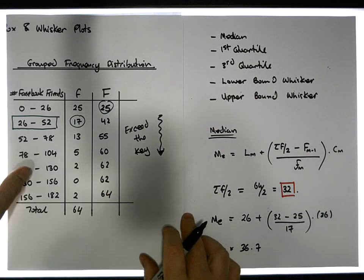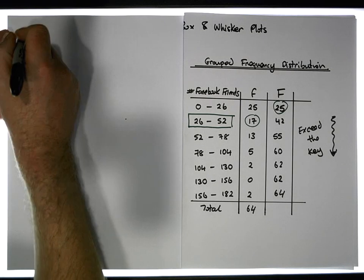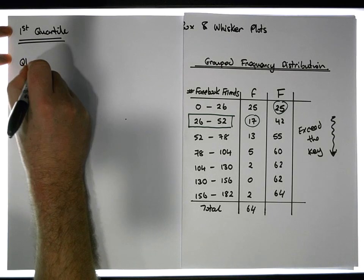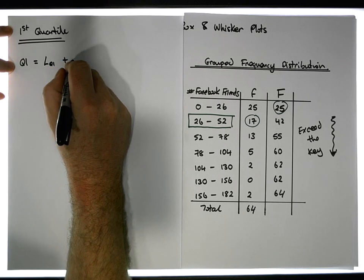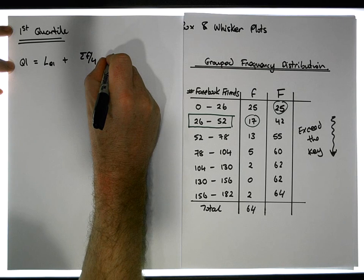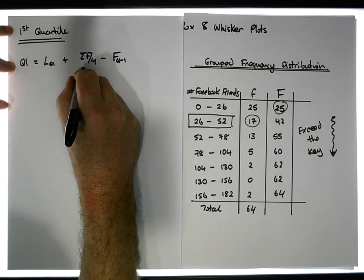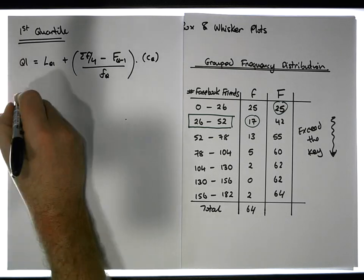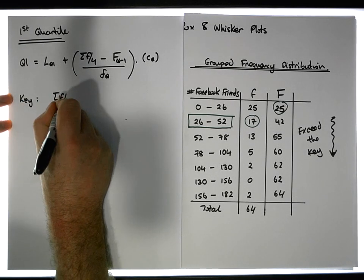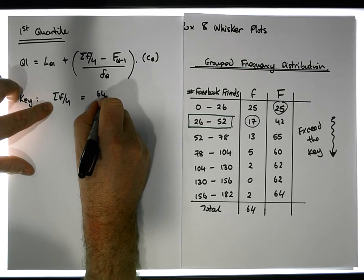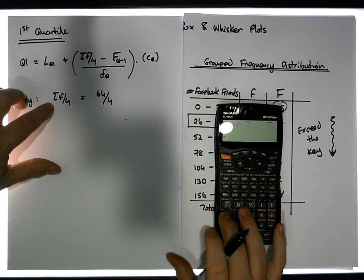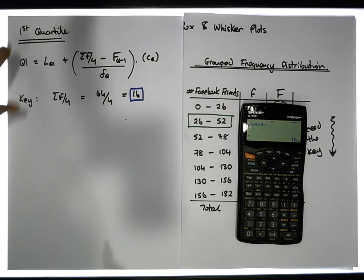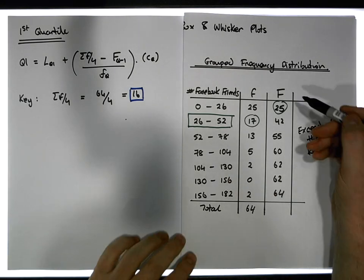Let's do the first quartile. The formula for Q1 looks similar to the median: Q1 is equal to L of Q1, the lower bound of the quartile class, plus σf over 4 minus the cumulative frequency of the class before the quartile class, divided by small f of Q — the actual frequency of the class — times the class width. The key in this case is σf over 4, which equals 64 divided by 4, giving us a key of 16.